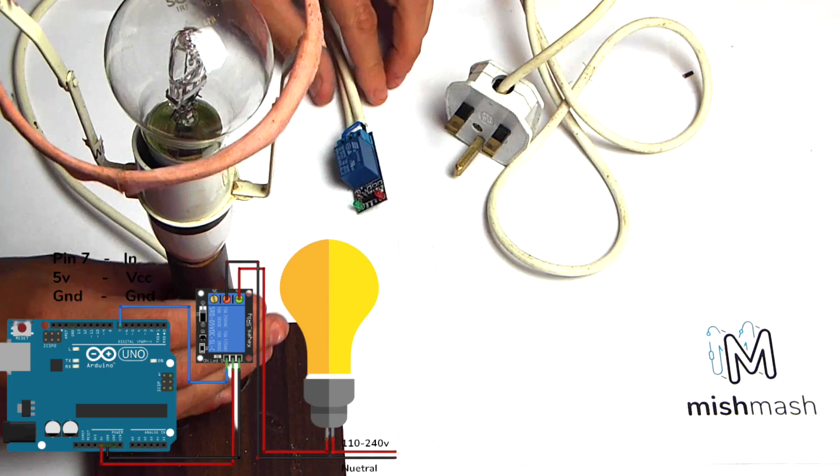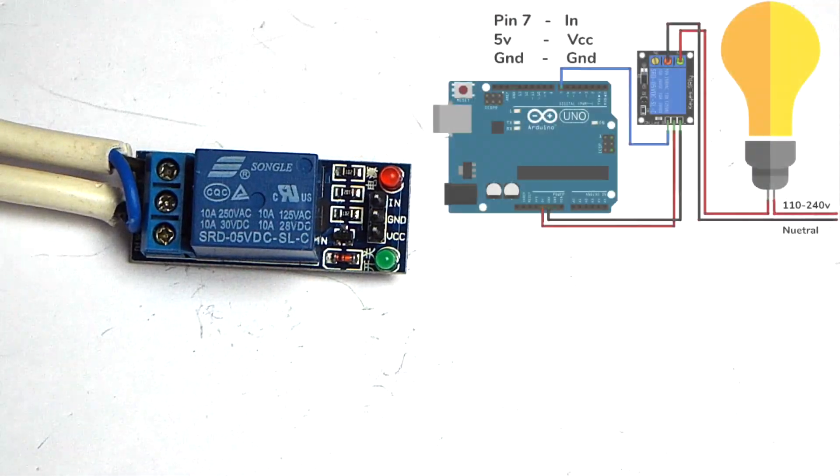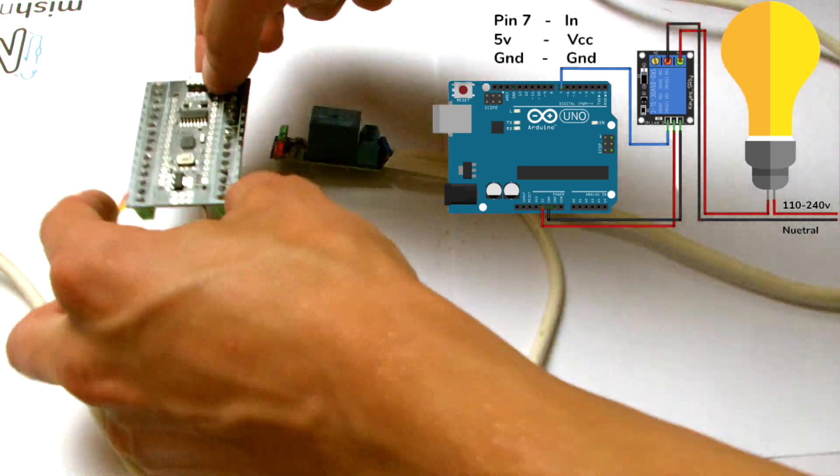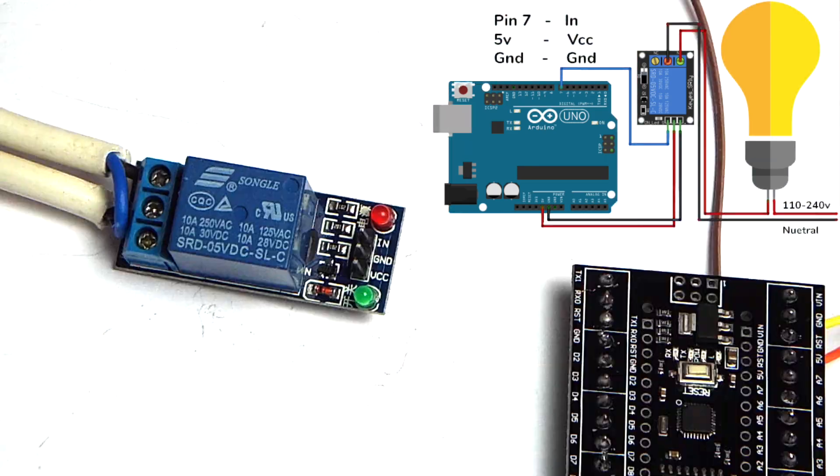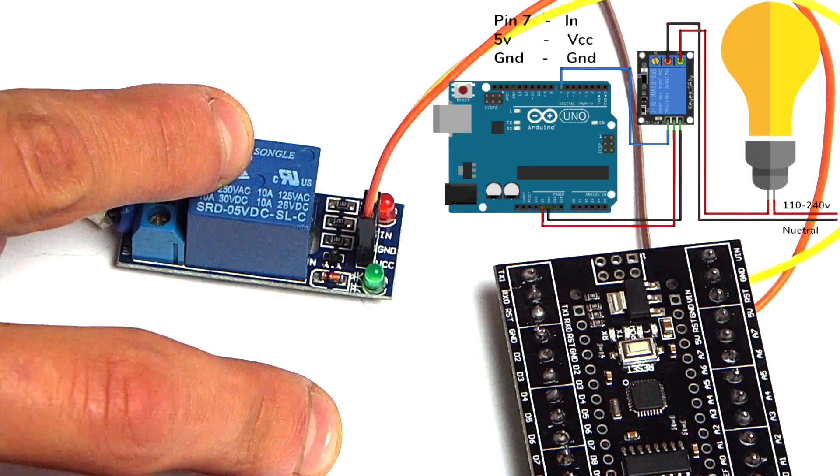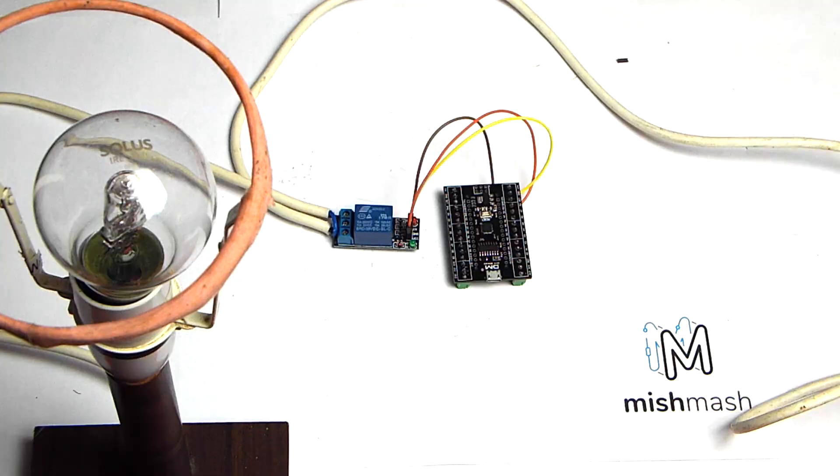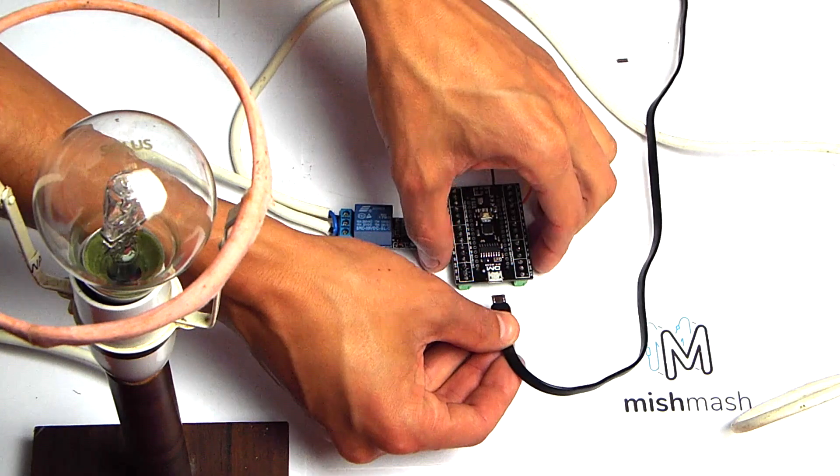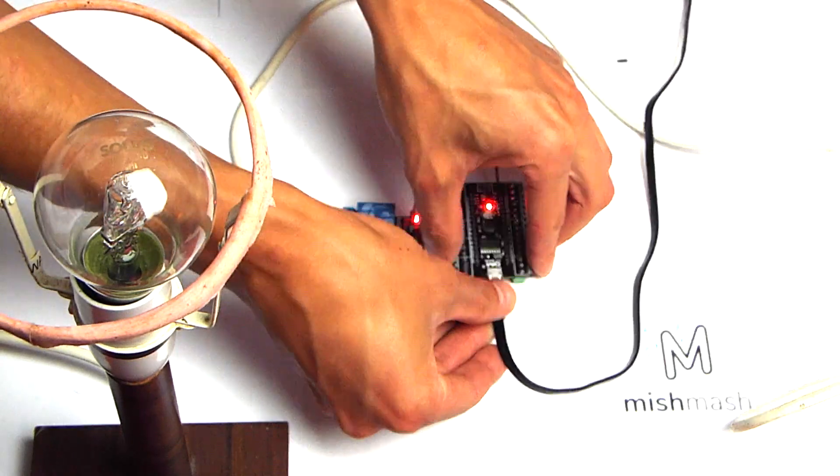Once the terminations have been screwed in, we're ready to reconnect the Arduino Nano and give it a test. So reconnecting the jumper cables, and next powering up the Arduino Nano.